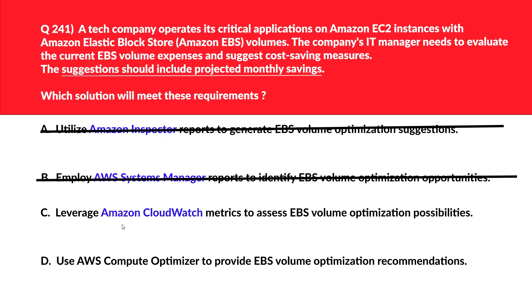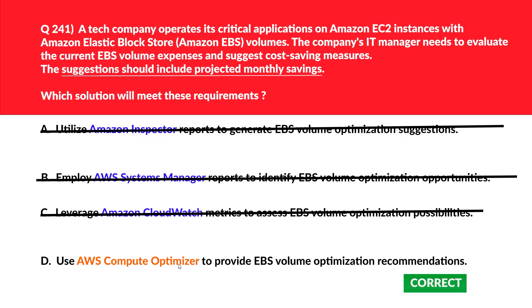Let's move to option C — Amazon CloudWatch. CloudWatch metrics provide monitoring and logging, but again CloudWatch is not related to cost optimization recommendations. We'll reject this. We are left with option D: use AWS Compute Optimizer to provide EBS volume optimization recommendations. AWS Compute Optimizer provides recommendations for EBS volumes including estimated monthly savings opportunities. So option D is the right answer.